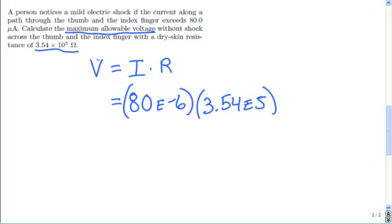When we multiply these values out, we get 80e-6 times 3.54e5, which gives us a value of 28.32.